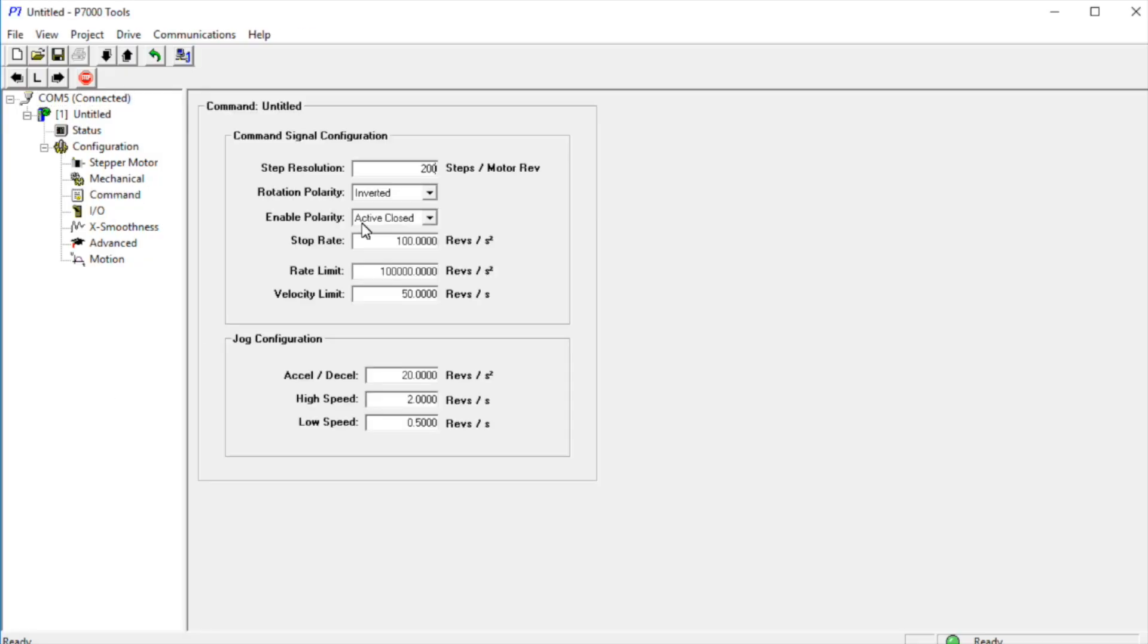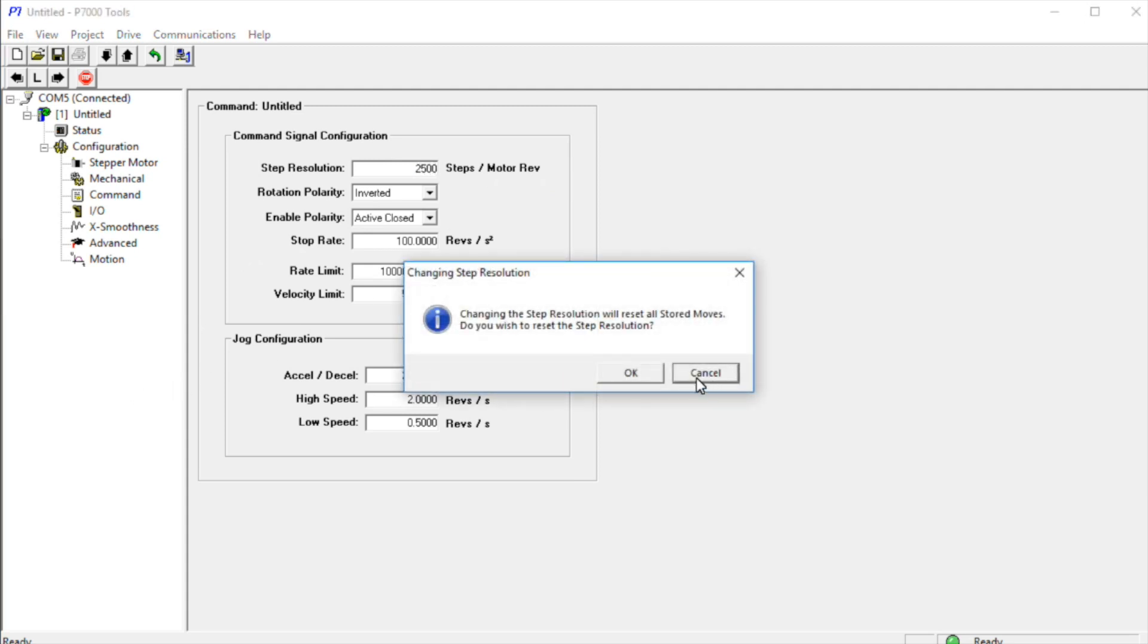With microstepping turned on at low speeds, the motion of the motor is nice and smooth, with each step broken into many points. The transition of each step is much smoother.